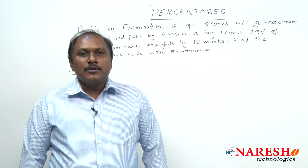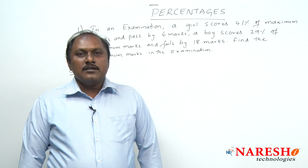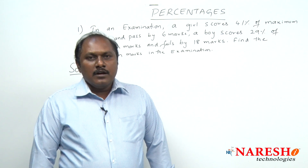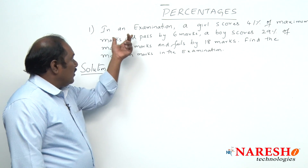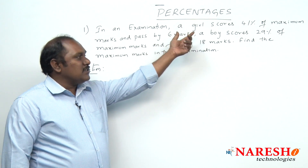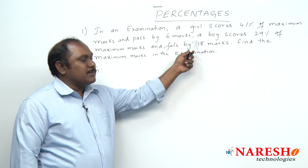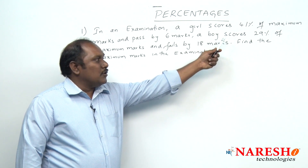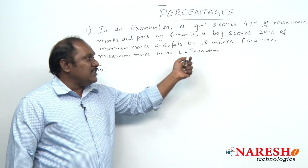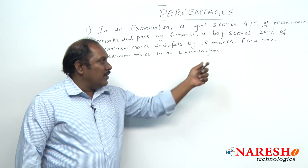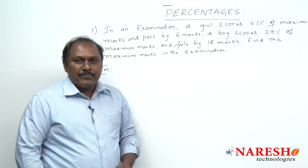Hi friends, welcome to Naraesha Technologies. Today let us start the third session on percentages. Let us look into the first question in this chapter. In an examination, a girl scores 41% of maximum marks and passed by 6 marks. A boy scores 29% of maximum marks and fails by 18 marks. Find the maximum marks in the examination.